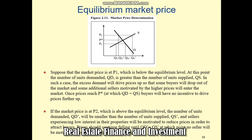When there is excess demand, prices are driven up so that some buyers drop out of the market and additional sellers, motivated by higher prices, enter the market. Once prices reach P*, where quantity demanded equals quantity supplied, buyers have no incentive to drive prices further up. If the market price is at P2, above the equilibrium level, the quantity demanded (QD) will be smaller than quantity supplied (QS), and sellers experiencing low interest will reduce prices to attract buyers. Prices continue falling until QD equals QS, at which point no seller is motivated to reduce further.